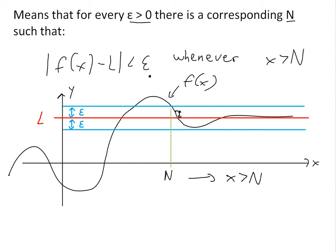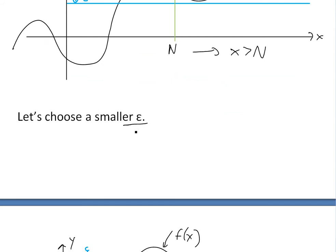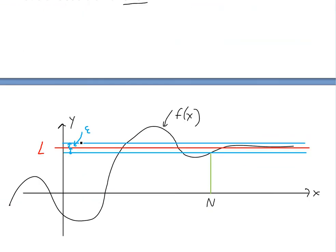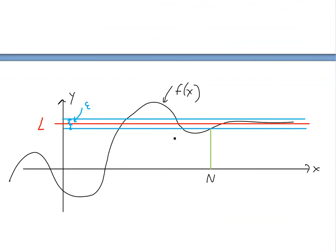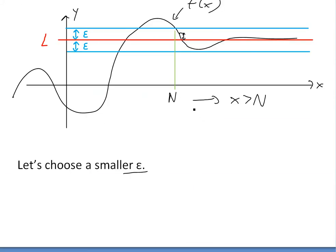The idea of the definition is that epsilon can be any number. So let's say we had an even smaller epsilon. If we choose a smaller epsilon — because the number doesn't matter as long as it's greater than zero — we choose one really small compared to the previous one. Then in order to check if the definition applies, we look at where the new N value is going to be. Note that N is dependent on epsilon, whatever it is.